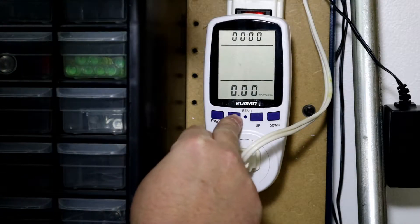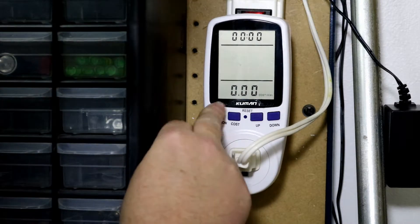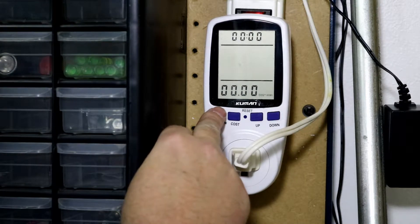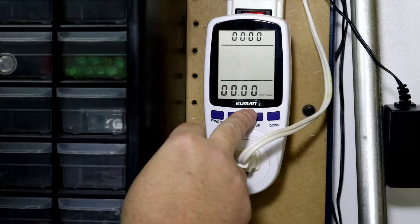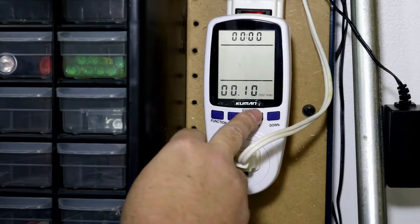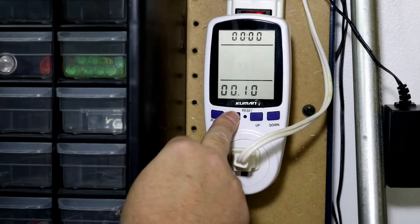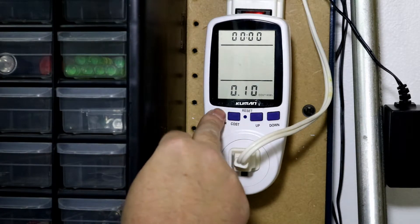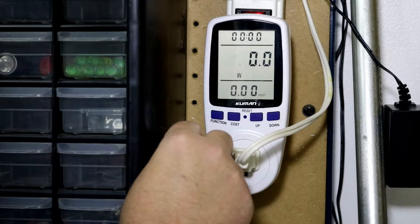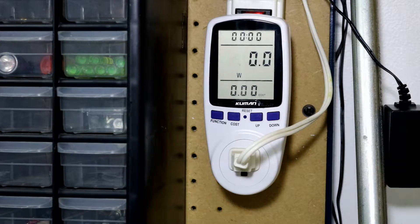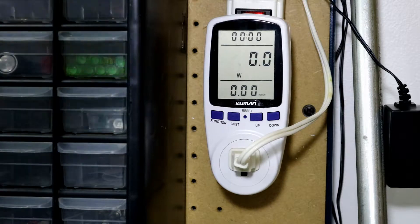For fun's sake, we're going to hold down the cost button, then we hit the function button, and then we go over to what we want for the kilowatt hour price to be. I think that should be 10. You lock that price in by pressing the cost button again, and then back to the main screen.